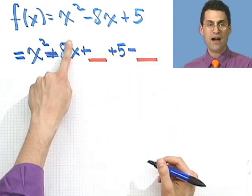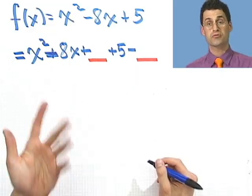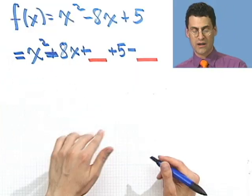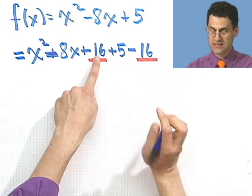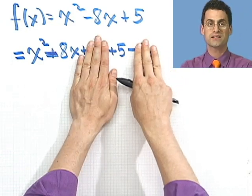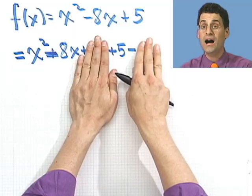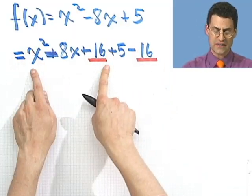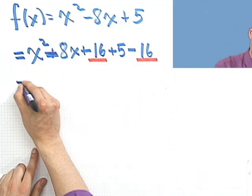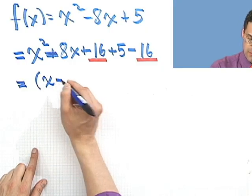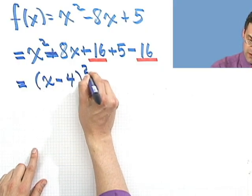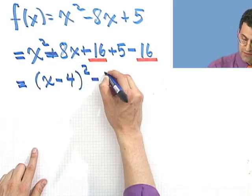And what do I write? Well, I take half of minus 8, which would be minus 4. And then I square it, which is a 16. So I'm going to put in a 16 and immediately take it out. 16 minus 16, it's 0. It's still the same thing as this. But the point is, writing it this way allows me to factor. This factors as a perfect square. This is going to be x minus 4 all squared. And then what's this thing give me? This gives me a negative 11.